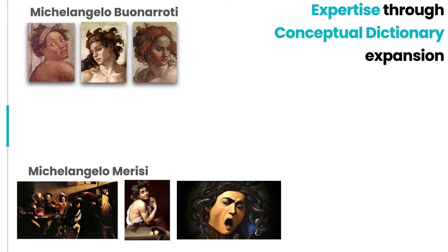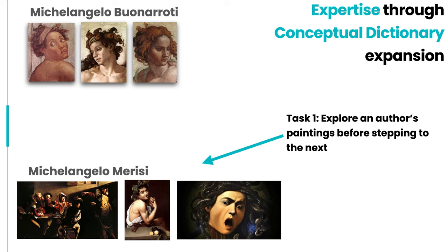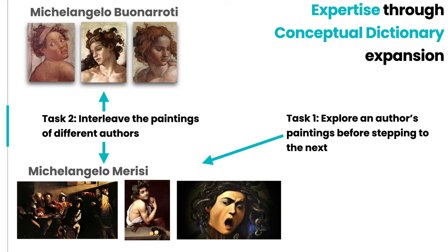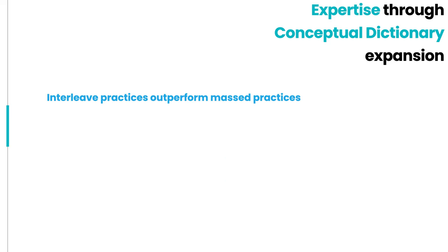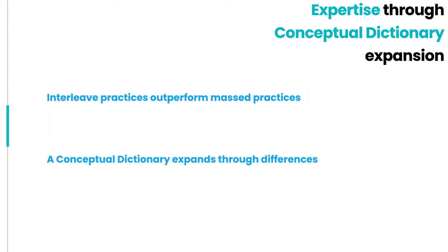Regarding the expansion of the conceptual dictionary, two studies showed how possessing a larger repository of concepts made students more competent. In the first study, participants were split into two groups and asked to explore different painters' styles using massed and interleaved practices. Massed practices consisted of being exposed to one painter's work at a time, whereas interleaved practices allowed students to mix different painters' studies. Contrary to initial beliefs, researchers found that interleaved practices produced better scores due to the higher power of discrimination enhanced by the simultaneous exposure to different works, which delivered a higher number of nuances and concepts. This allowed students to expand their dictionaries and empowered their interpretation skills, despite the longer time required to interleave the practices. It is through the differences, rather than the similarities, that one can expand the conceptual dictionary.